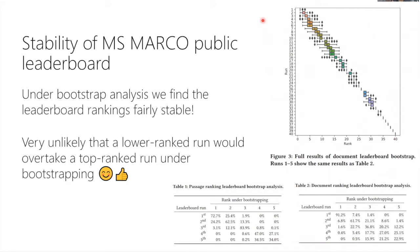Another internal validity question is whether the rankings on the leaderboard are valid. We did bootstrap analysis on the document and passage ranking leaderboards, which have about 5,000 to 6,000 queries. We sampled 100 different subsets and recomputed the leaderboard for each. We were expecting a lot of confusion at the top, but the ranking is actually quite stable — the run at position one on the leaderboard appears in that position 91% of the time across subsamples. This gives us confidence that the leaderboard rankings are meaningful.